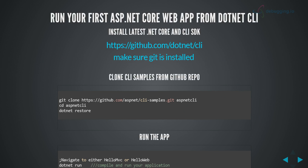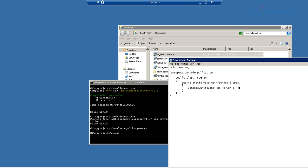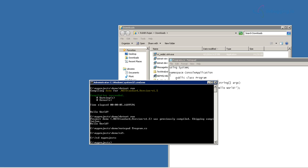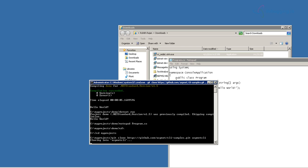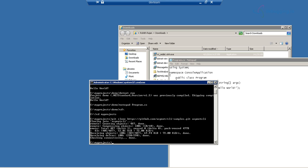Now let's run an ASP.NET Core application. We have an ASP.NET CLI sample. All you have to do is clone the sample to a directory, then run 'dotnet restore' and 'dotnet run'. We also have a templating system built into .NET Core, similar to Visual Studio's 'New Project' wizard, which we'll cover later. For now, I'm going to directly clone the project from a GitHub repo.